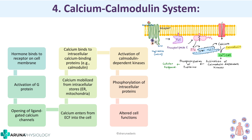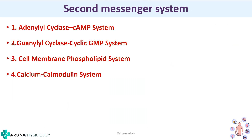That completes our second messenger system. We have seen the adenylyl cyclase cAMP system, the guanylyl cyclase cGMP system, the cell membrane phospholipid system, and the calcium-calmodulin system. I hope this video helps you get a good understanding of these second messenger systems. Thank you.